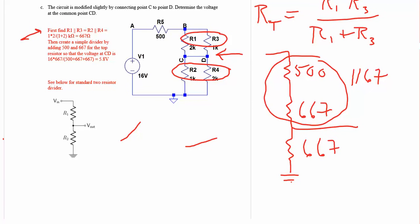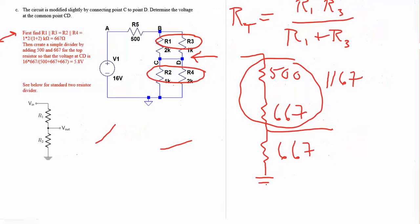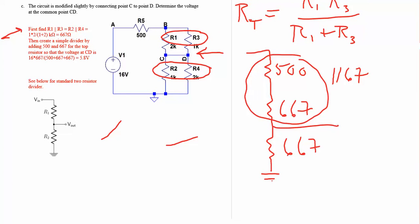The voltage divider now is the 667, which is the resistance down here at the bottom, and the remaining resistor is this combination of 500 and 667. And that's actually indicated over here. And so the voltage at the common point is 5.8 volts.